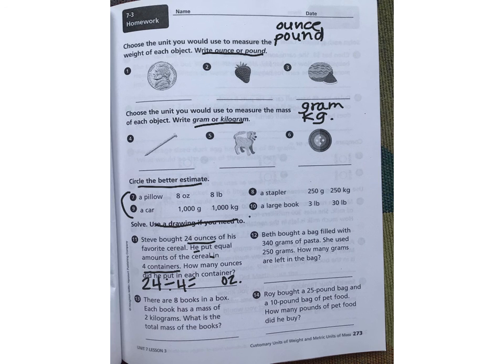Remember on these, they can always be plus, minus, times, or divide. All right, let's look at number 12. Beth bought a bag filled with 340 grams of pasta. She used 250. How many grams are left? If we know she's starting with 340 and she's using or taking away 250, then you'll need to solve to see how many grams she has left.